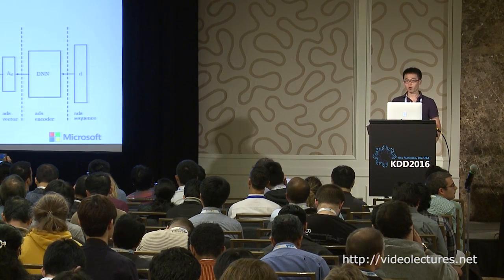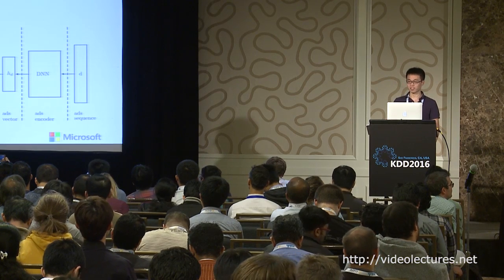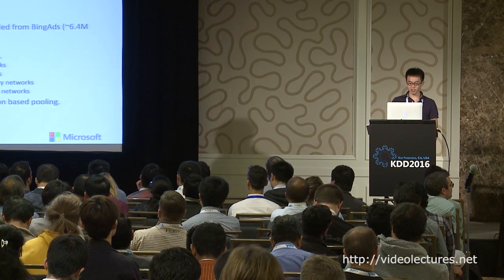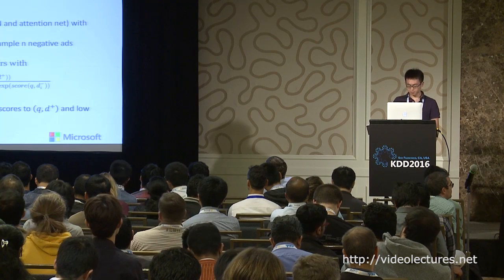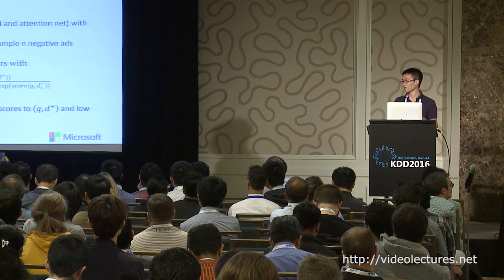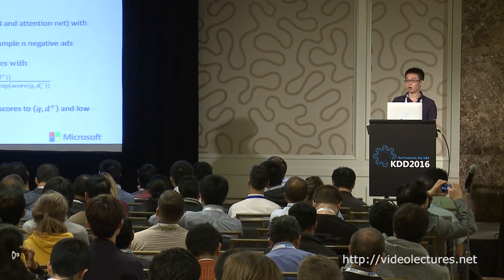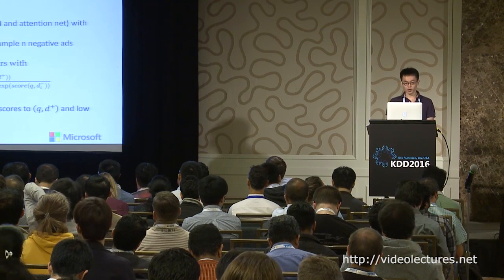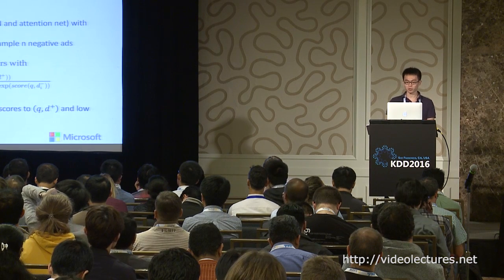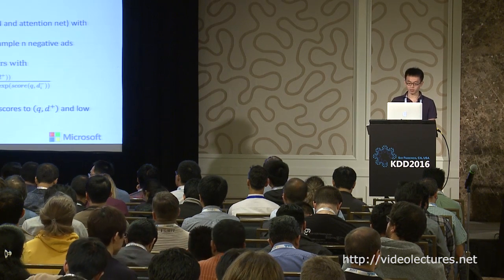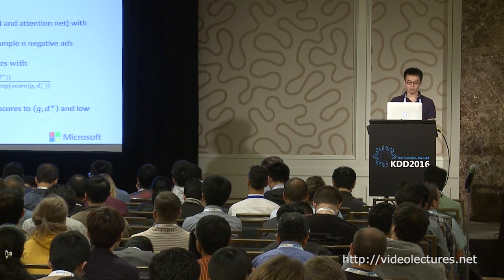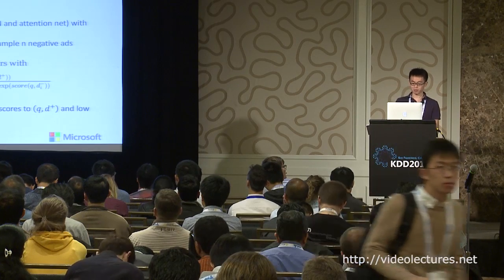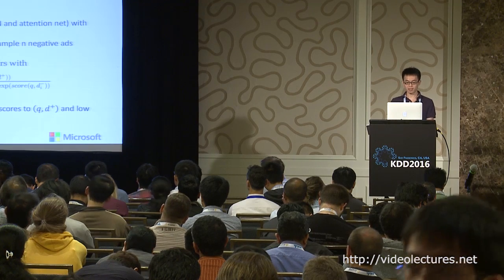Now let's talk about how we construct loss functions to learn all the parameters. The data we use are click logs sampled from Bing Ads. All parameters — including word embeddings, the parameters of the RNN, and the parameters of the attention net — are all trained end-to-end. The loss function specifically looks like this: for each positive pair, which is a query-ad pair that was clicked by users, we sample negative ads that are not clicked by that specific query. We then construct a softmax-like objective function such that minimizing this loss raises the score of positive pairs and decreases the score of negative pairs. We use backpropagation and SGD to update the parameters.